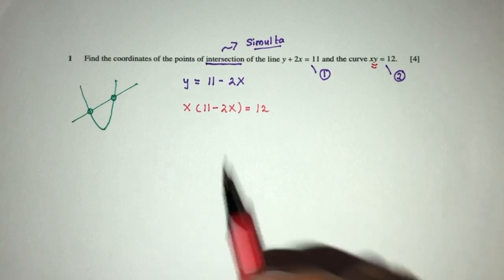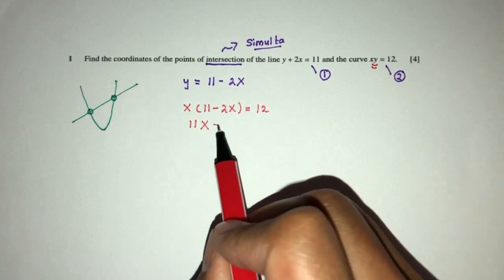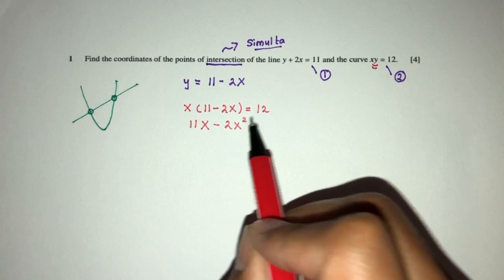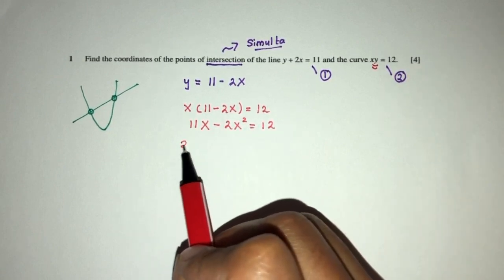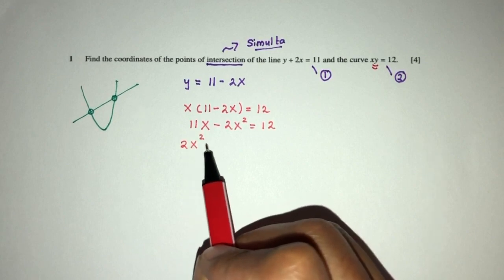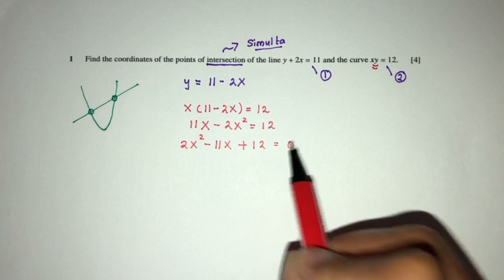Now solve step by step. That will be 11x minus 2x² equals 12. Let's move everything to one side. You will have 2x² minus 11x plus 12 equals 0.